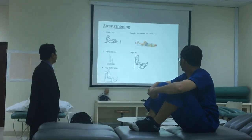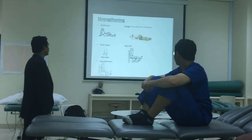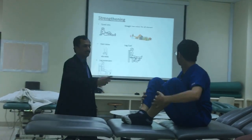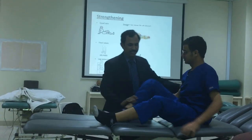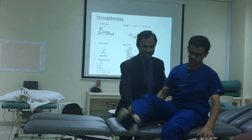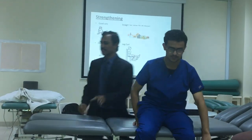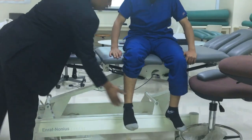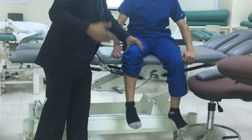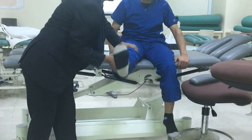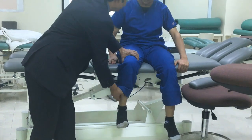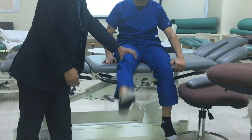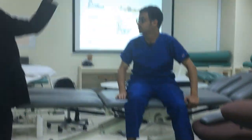Now, strengthening exercises. Number one: quadricep sets - sitting, tie a resistance here and do leg extension up - one, two, like this. Number two: supine position, tie right here, lift up straight - wait above the ankle joint and perform the movement.